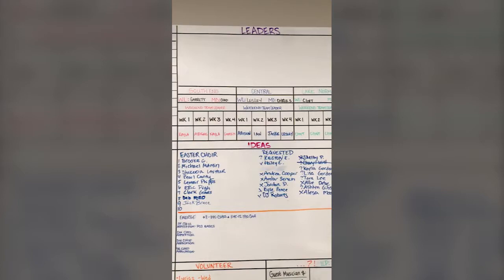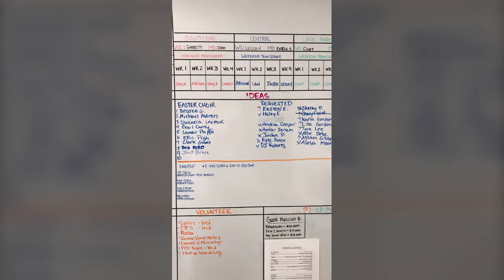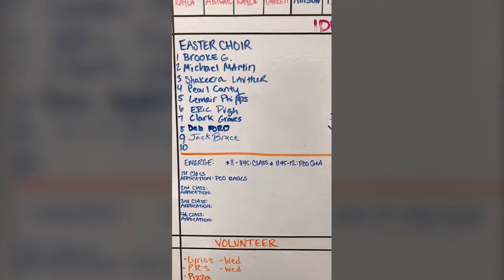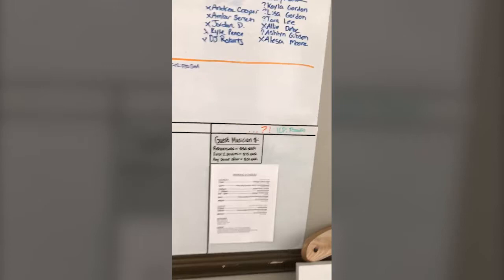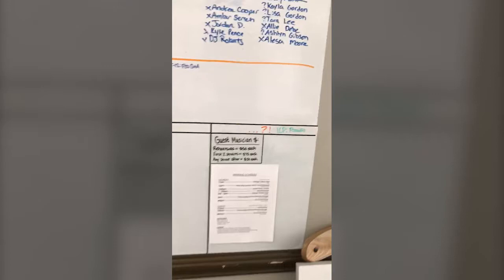Ideas are things that we're working on. Emerge class — again, this is when we're going to have our next Emerge class, when applications are due, etc. That is our onboarding process. Volunteers that we need to do specific tasks, guest musicians, and weekend schedule. Emerge, culture class, all that kind of fun stuff.